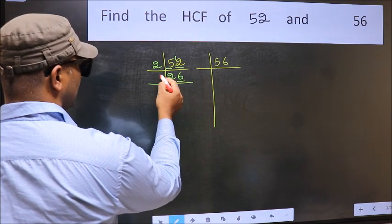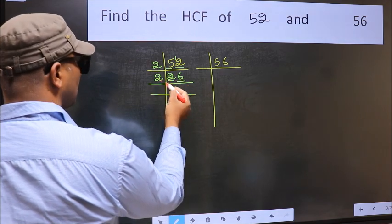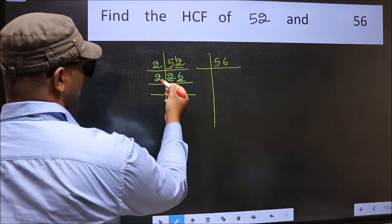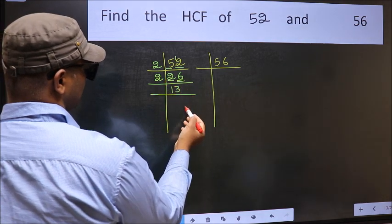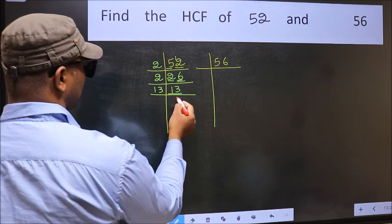Now last digit 6 even, so take 2. First number 2, when do we get 2 in 2 table? 2 times 1 is 2. The other number 6, when do we get 6 in 2 table? 2 times 3 is 6. Now 13 is a prime number, so 13 once 13.